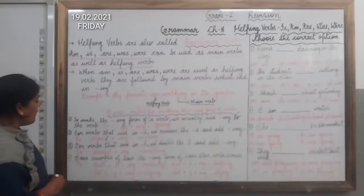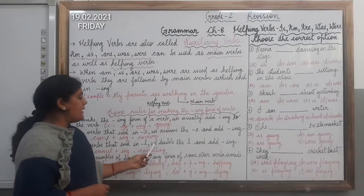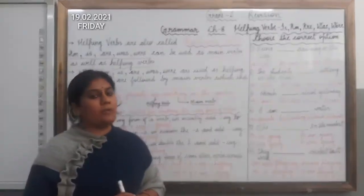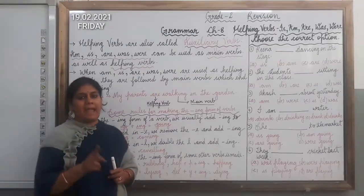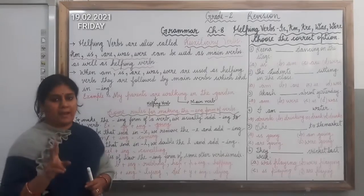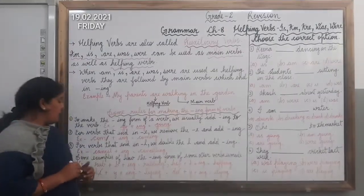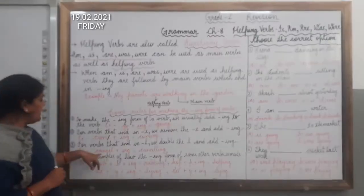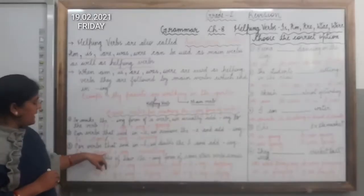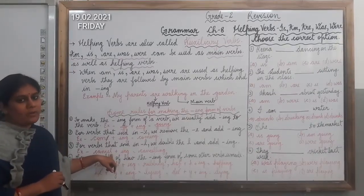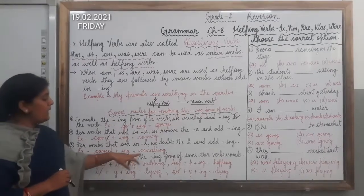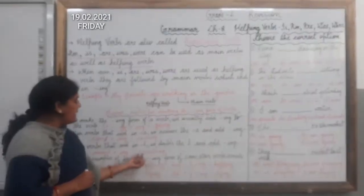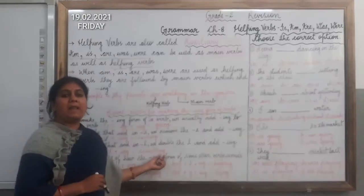The third rule says that for verbs that end in L, we double the L and add ing. The verbs which are ending with the letter l — what you will do in these cases? We will double the letter l, meaning we will write l two times, when we add ing to the verb. For example, the verb is cancel. You can see that this verb is ending with the letter l. So when you add ing, you double the letter l and then add ing. So the spelling of cancelling will be C-A-N-C-E-L-L-I-N-G.